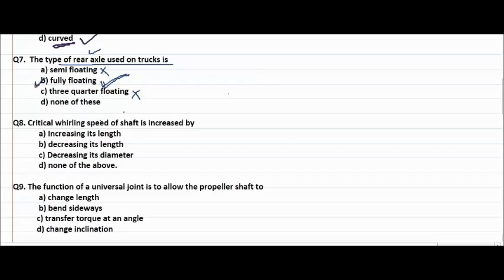Then they are asking critical whirling speed of shaft is increased by increasing its length, decreasing its length, decreasing its diameter, none of the above. Decreasing its length is the right answer.